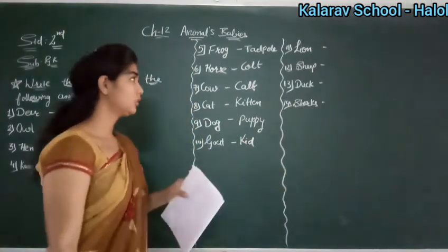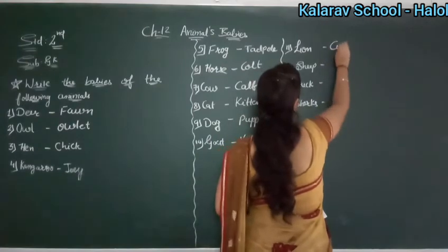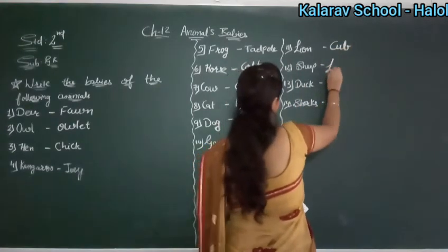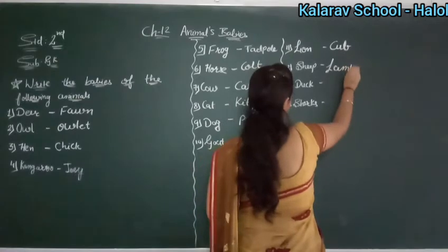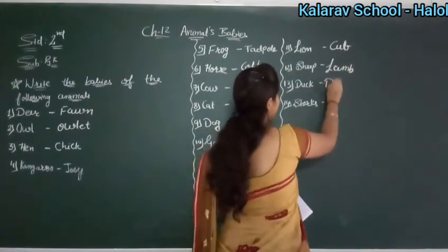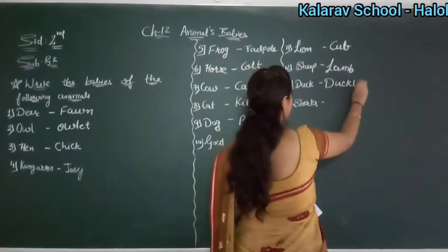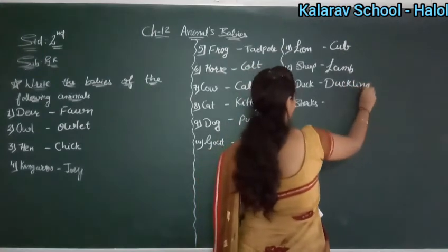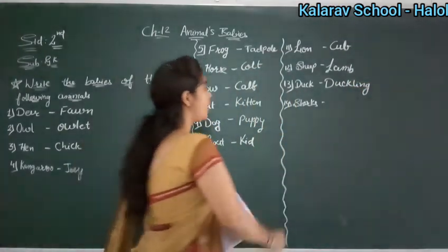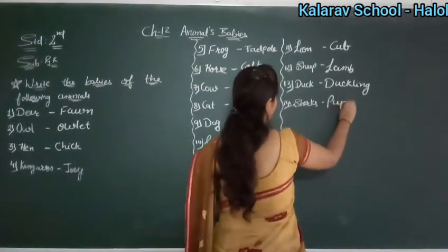Lion — cub. Sheep — lamb. Duck — duckling. And shark — again it is called pups. So here you will write pups. Clear?